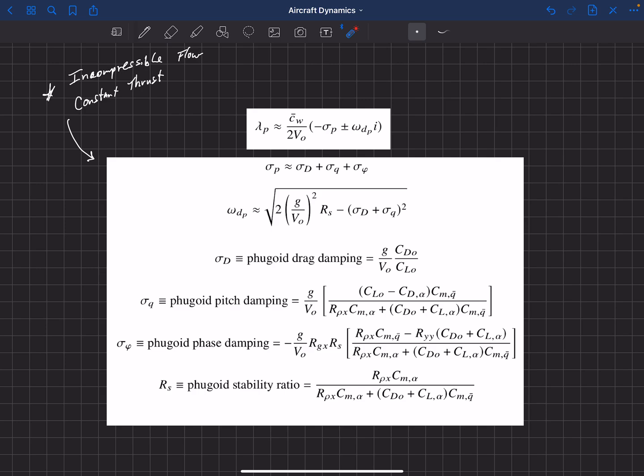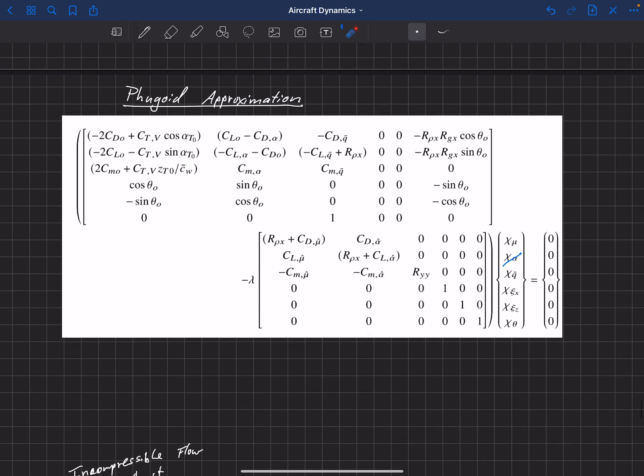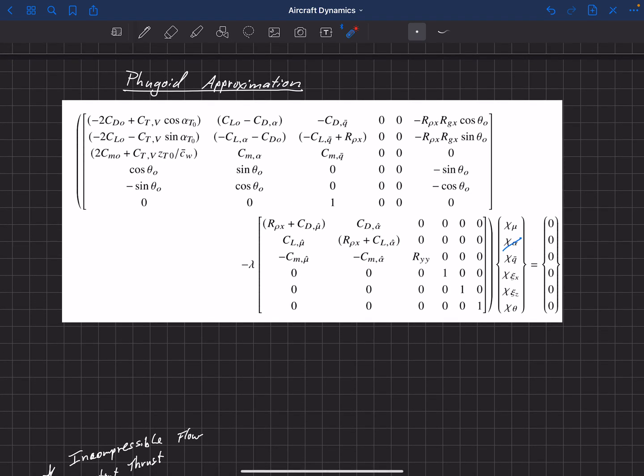This is actually a fairly accurate approximation for the fugoid damping and the fugoid frequency. And of course those can be plugged in to get the dimensionless eigenvalues for that fugoid mode. So you can code this up and compare it to results that you would get from solving the full longitudinal eigen problem. And you should find that results here match really quite well to what you get out of this full eigen problem.